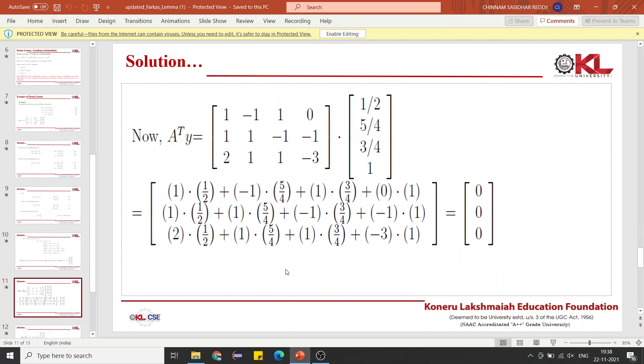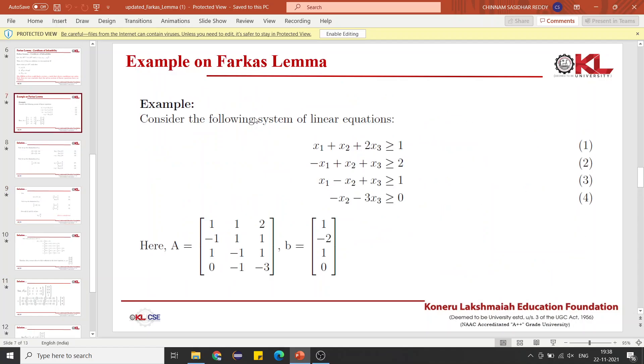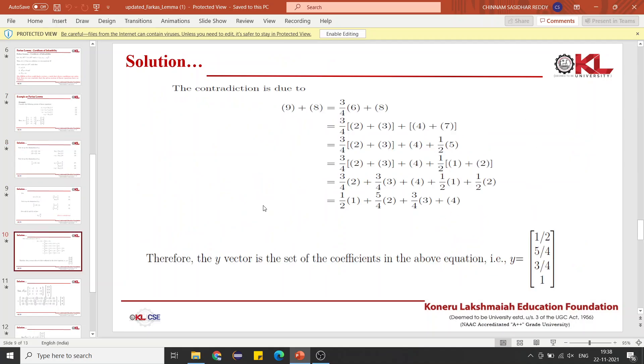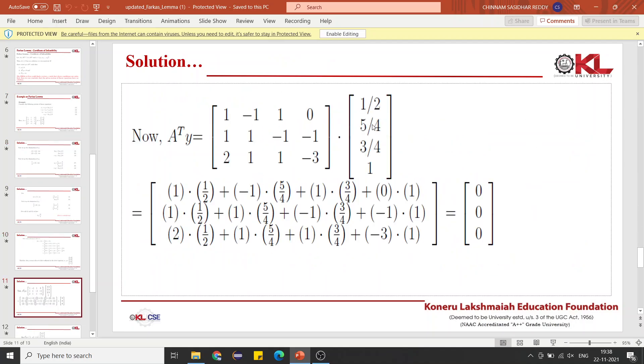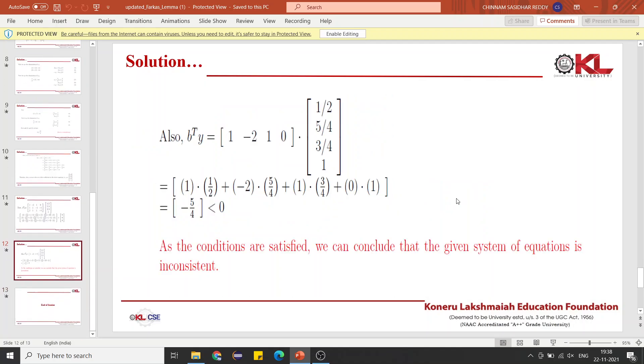Now, what we will do is multiply A transpose with Y. A transpose is nothing but writing that matrix in a horizontal way, where column becomes row and row becomes column. A transpose times Y gives you 0. Then B transpose times Y gives minus 5/4, which is less than 0.